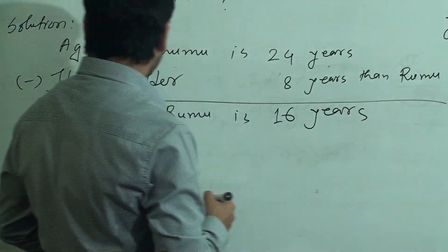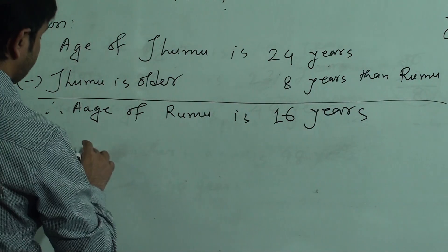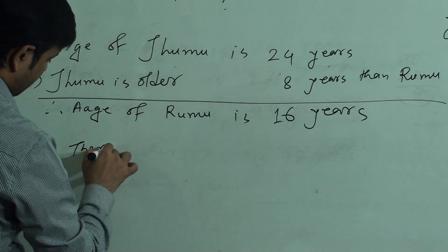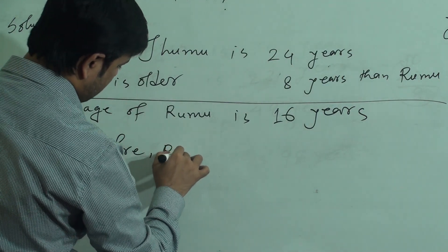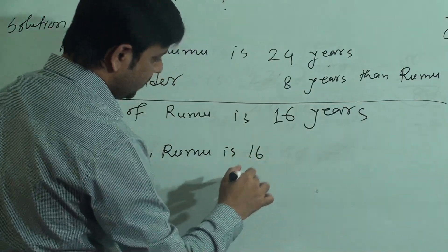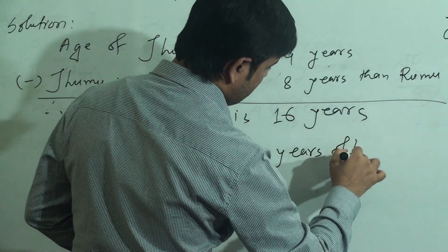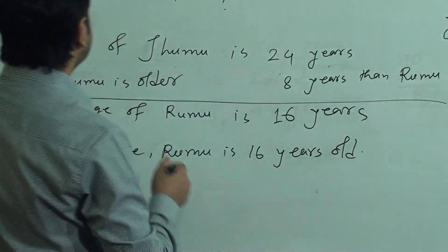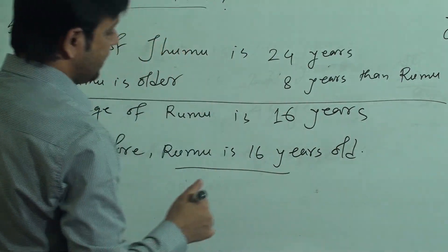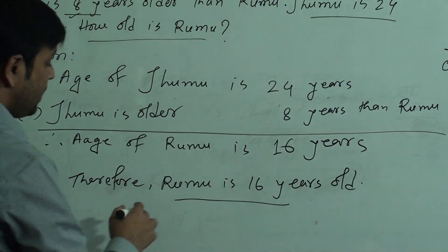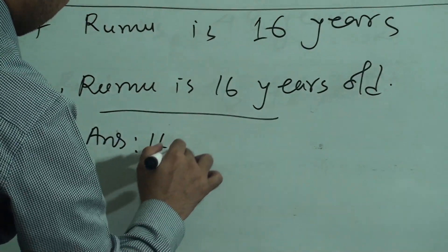Therefore, Rumu is 16 years old. Our question is how old is Rumu — yes, we have determined Rumu is 16 years old. So this is our solution of question 8. The answer of question 8 is 16 years.